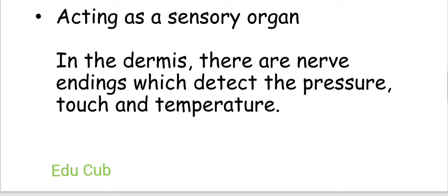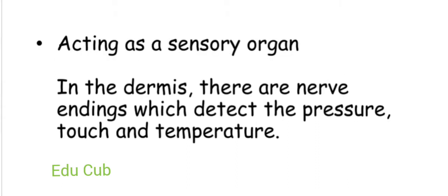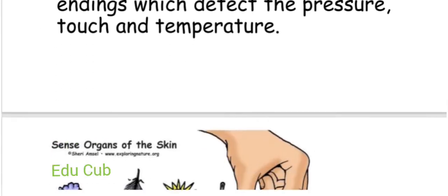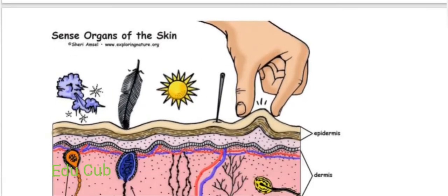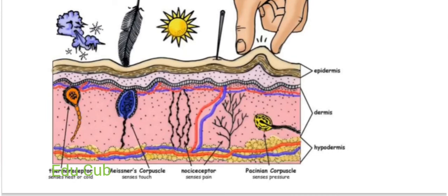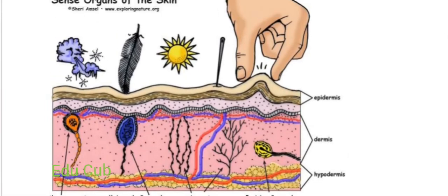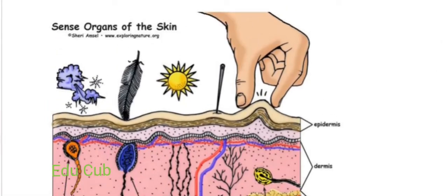The next function is acting as a sensory organ. In the dermis there are nerve endings which detect pressure, touch, and temperature. This figure shows you how the skin acts as a sensory organ.